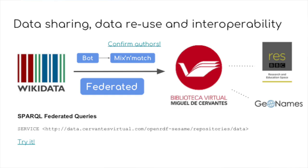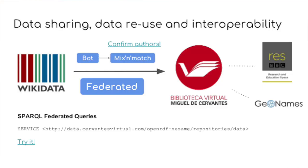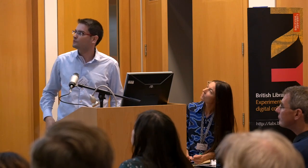Thanks to this work, Wikidata contacted us in order to link their Wikidata entities to our repository. They did it semi-automatically, and then we revised the whole linking with the tool Mix and Match. Thanks to this linking, users can access our catalog through the SPARQL endpoint of Wikidata, and you can see here an example in case you want to try.